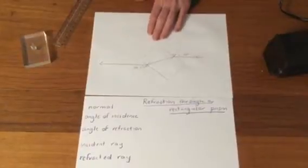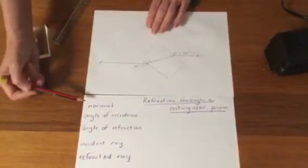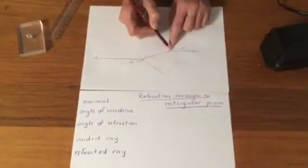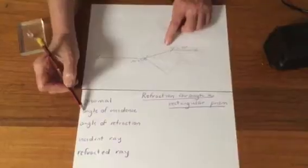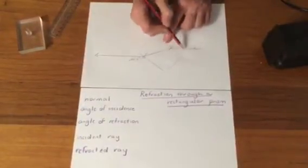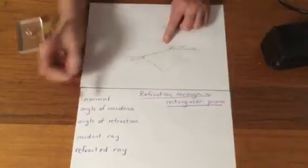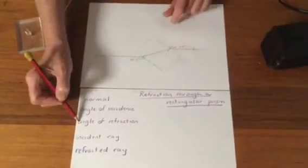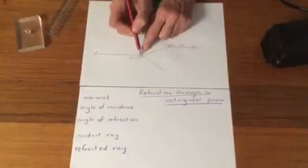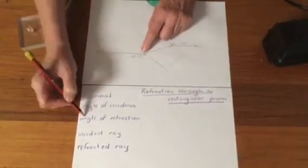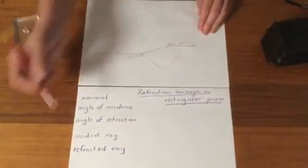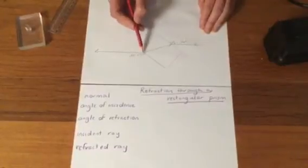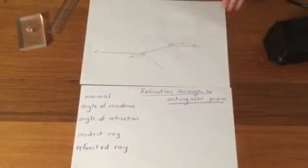And that's your diagram complete. Let's just check we've got our labels right. So drawing the line 90 degrees to the slab is called the normal. The angle of incidence is the angle between your incoming ray and that 90 degree line. Your angle of refraction is the angle between the ray coming out and the 90 degree line. The incident ray is the name given to the incoming ray. And the refracted ray is the name given to the ray that's leaving. Thank you for listening.